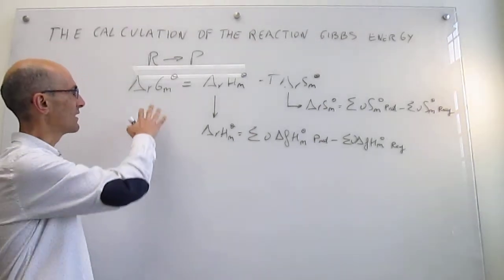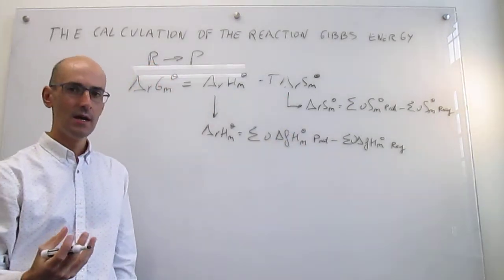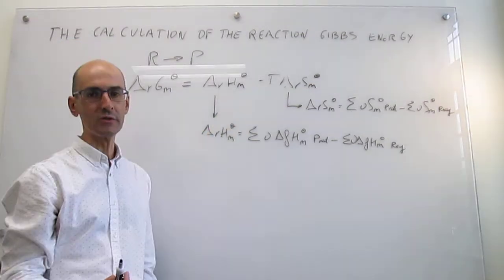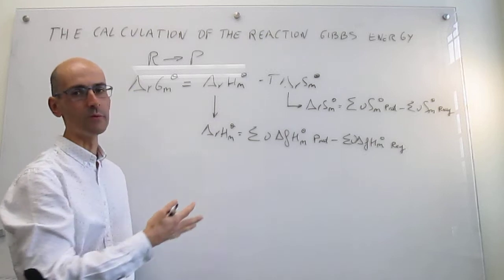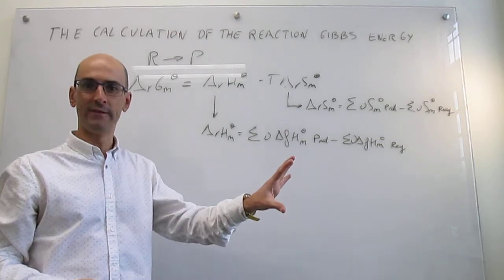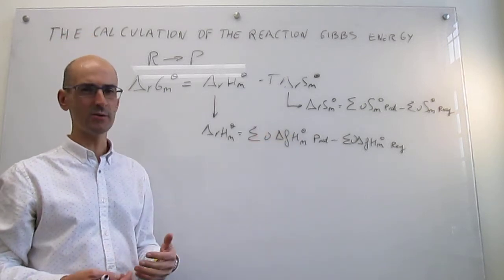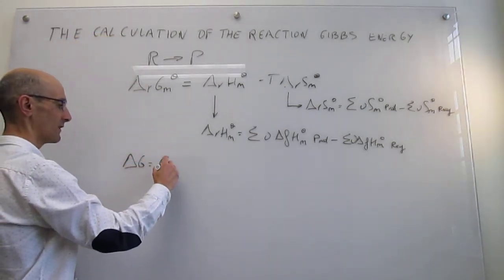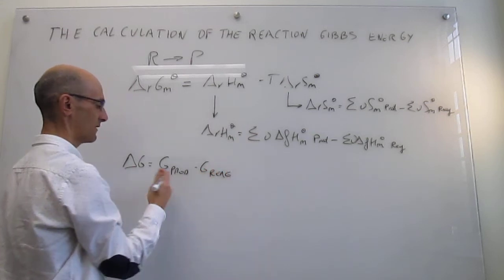This calculation of the reaction Gibbs energy looks a little tedious, because if you don't have those data directly, you actually have to perform two long calculations. A question is whether we can use something similar — a similar recipe — for the Gibbs energy. Notice that enthalpy and entropy are state functions, and we leverage that state-function property to set up a calculation where you take the final state (products), determine its enthalpy or entropy, and subtract that of the initial state (reagents). So can we do something similar for Gibbs energy — calculating it as the Gibbs energy of products minus the Gibbs energy of reagents?